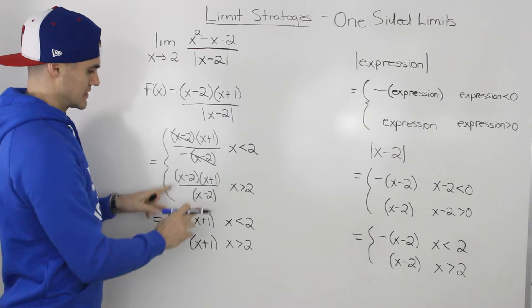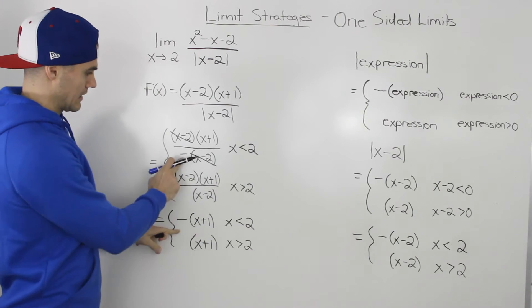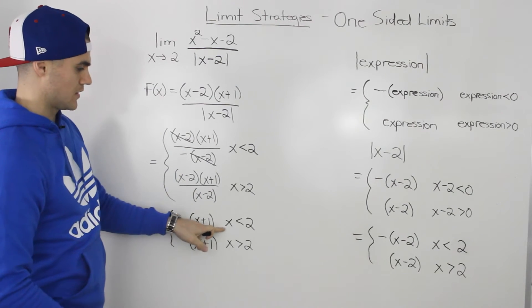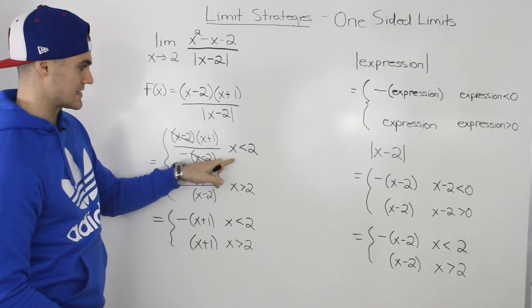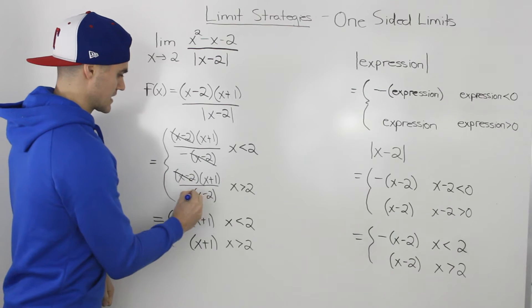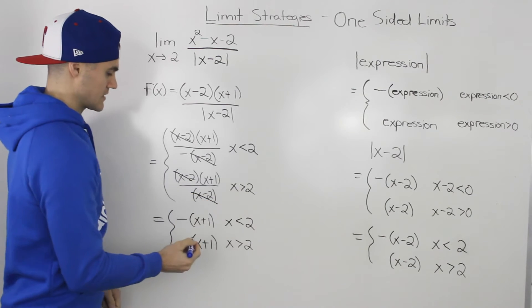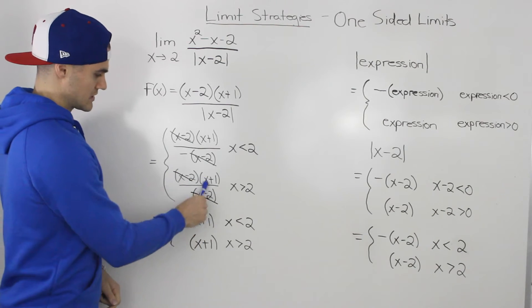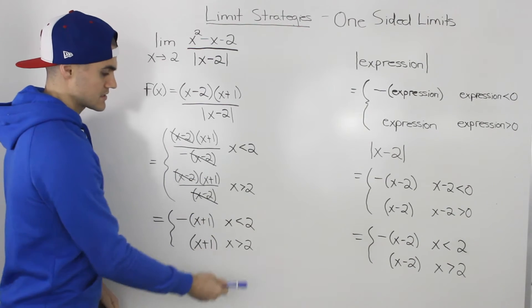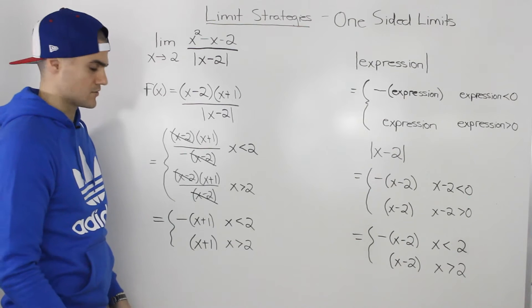After cancellation, we're left with negative (x plus one) when x is less than two, and (x plus one) when x is greater than two. So we now have a simplified piecewise function that we can graph.